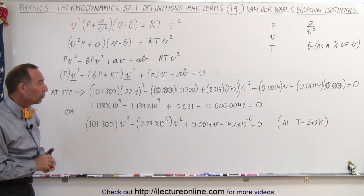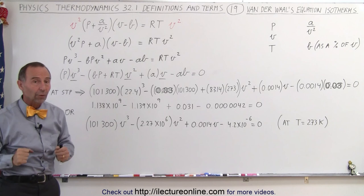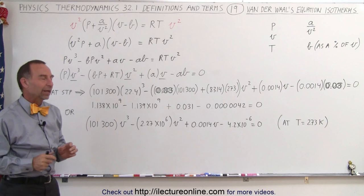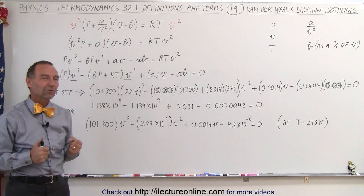So what we're going to do next is draw a PV diagram with the various isotherms to see how the Van der Waals equation really changes that graph compared to what the graph will look like when we use the ideal gas equation.